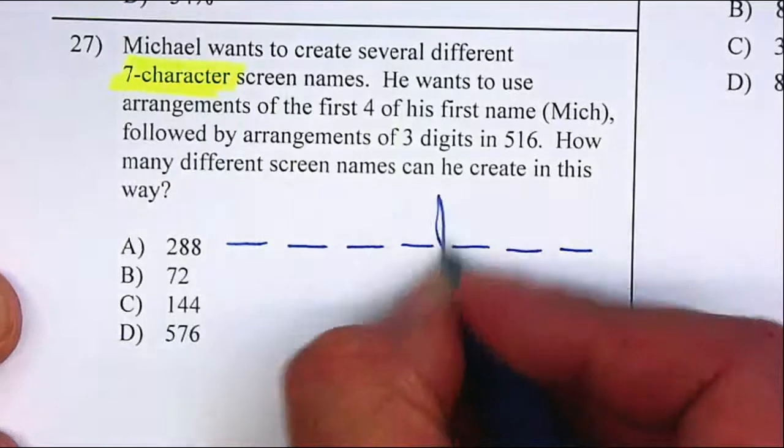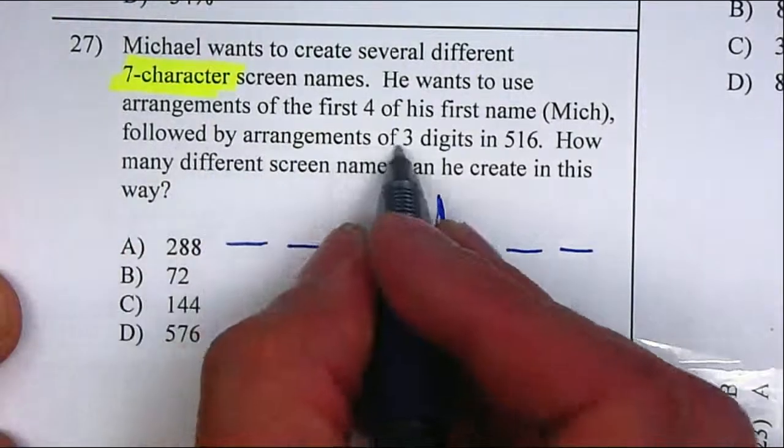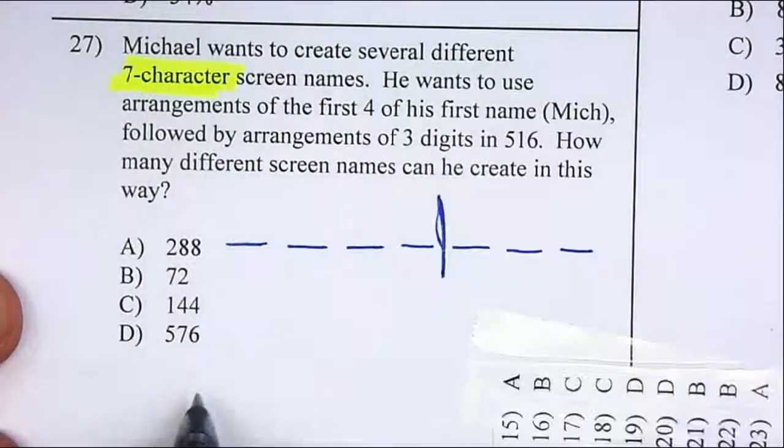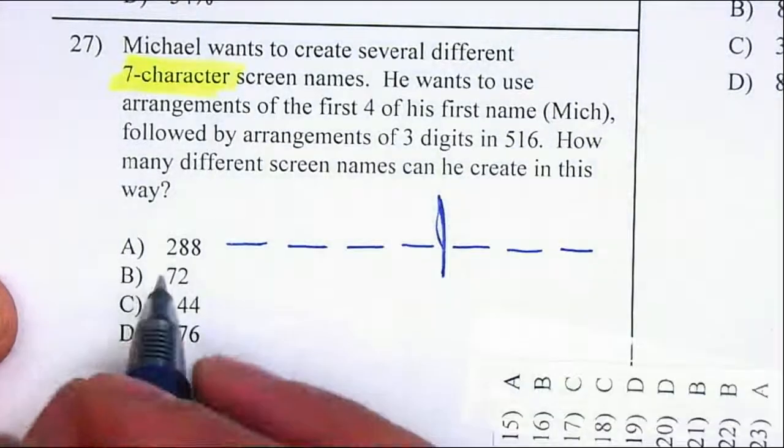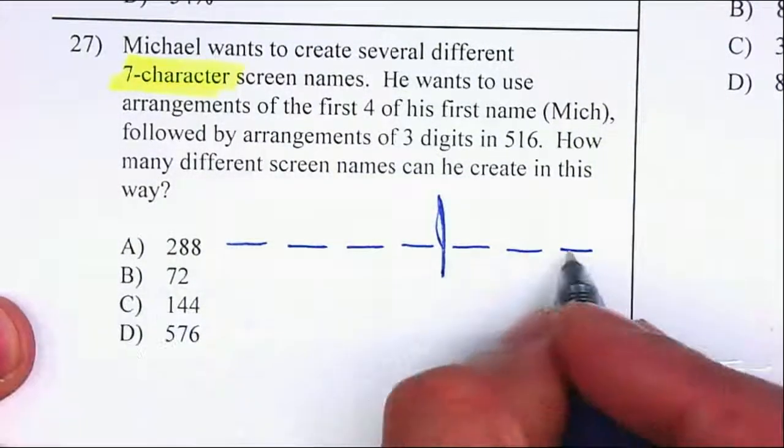So those are for the letters, and arrangements of the first three digits, five, one, six. Now, those are for the digits.